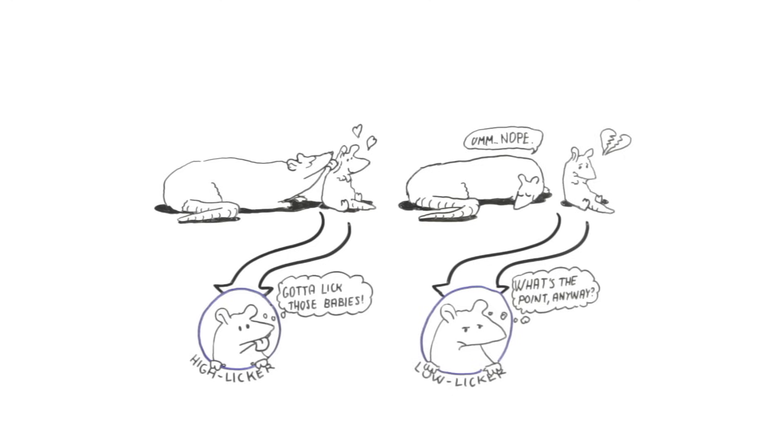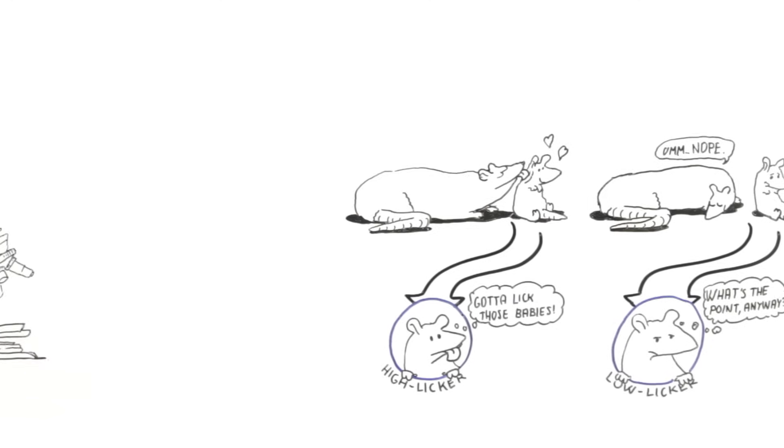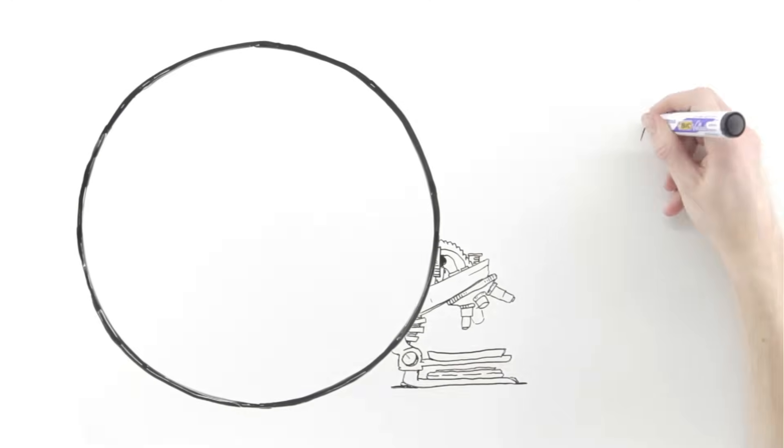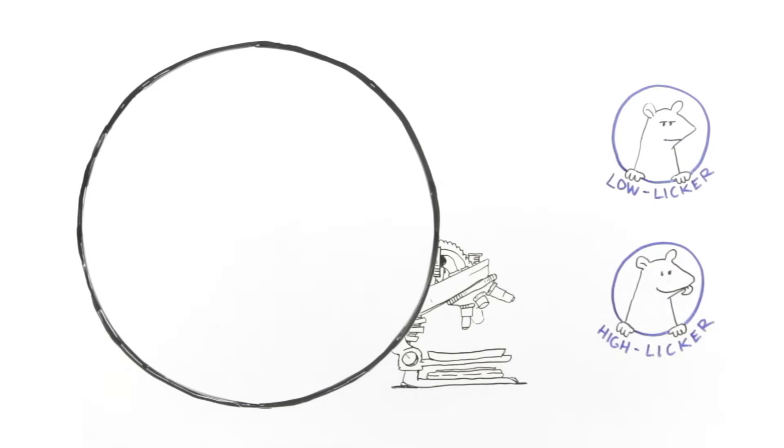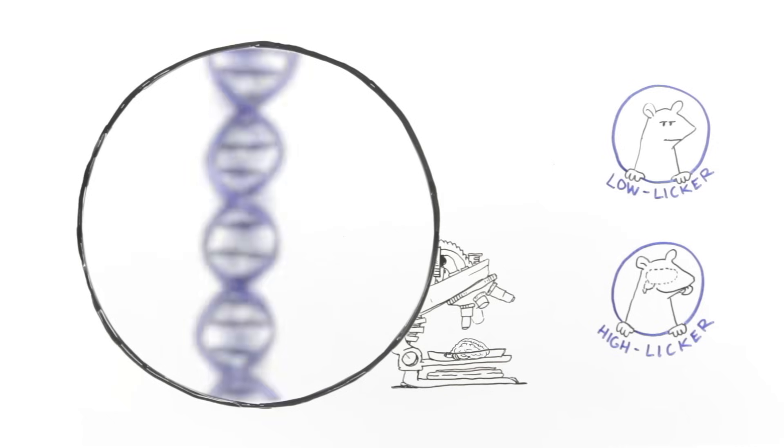So genes really don't have anything to do with it then? In true scientific fashion, the researchers dove right into the brains of these rats to see what, if anything, was different in the brains of the babies of high-licking versus low-licking mothers. When they looked at genes that possibly play a role in motherly care, they found crucial differences.